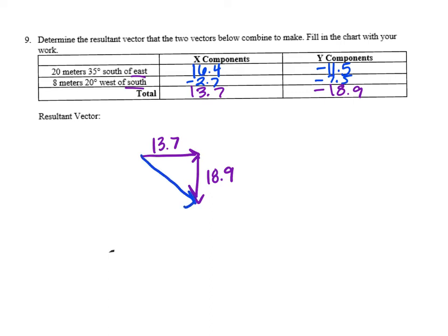We're going to use Pythagorean theorem: 13.7 squared plus 18.9 squared equals r squared. When you work that out, you're going to get an answer for r of 23.3 meters.